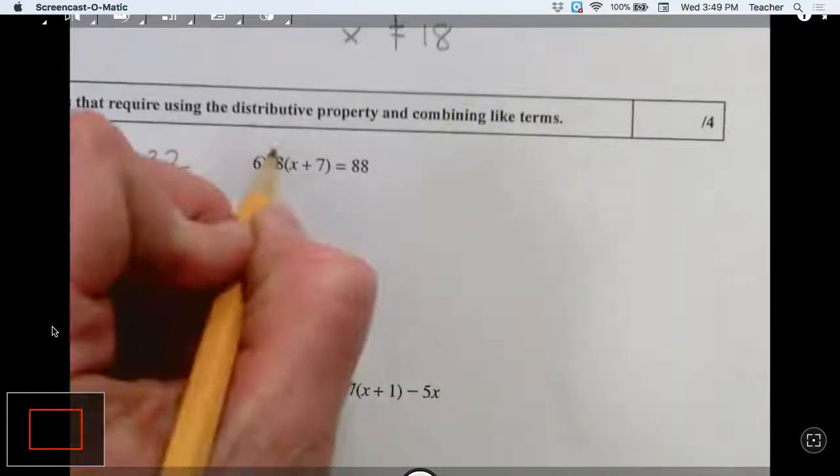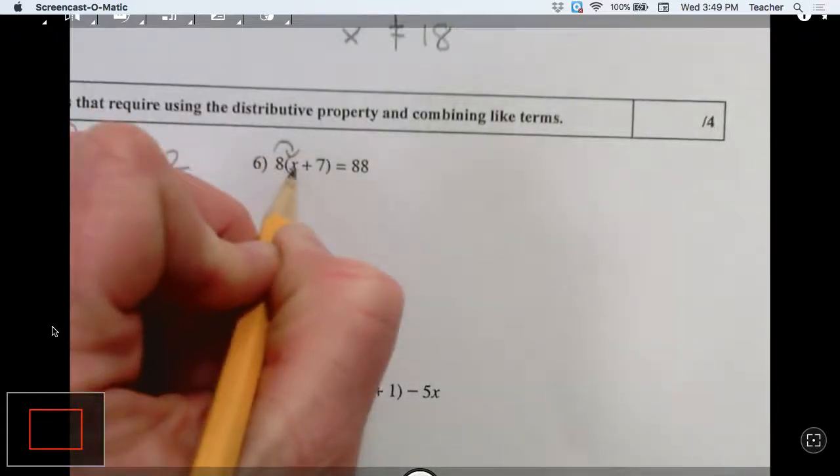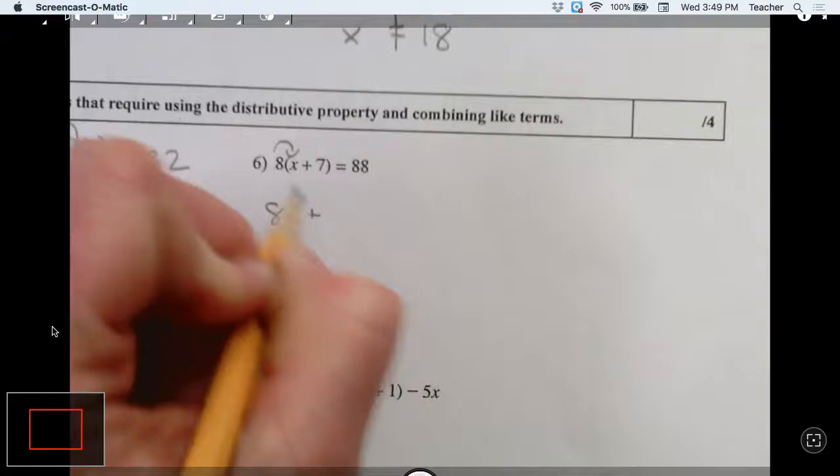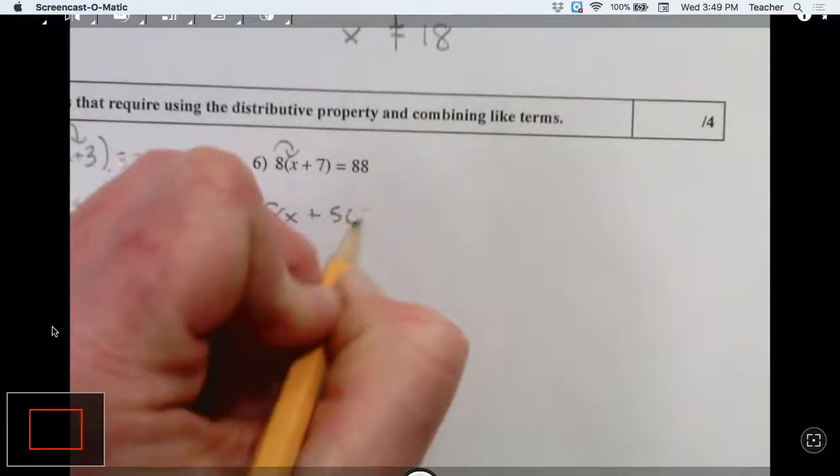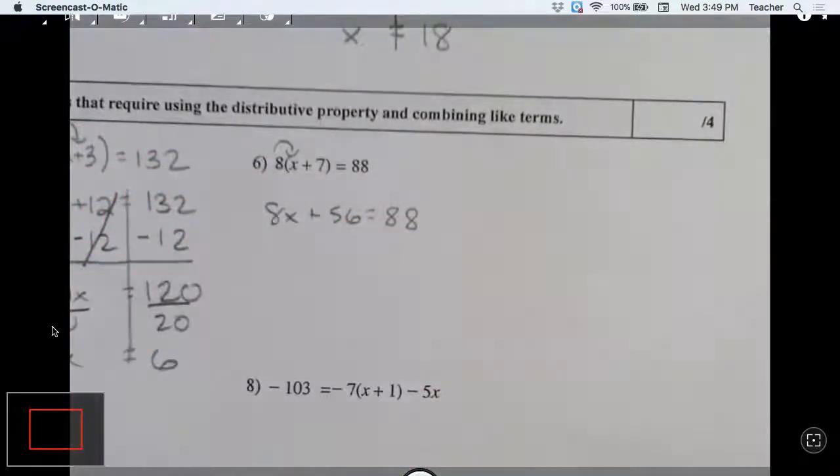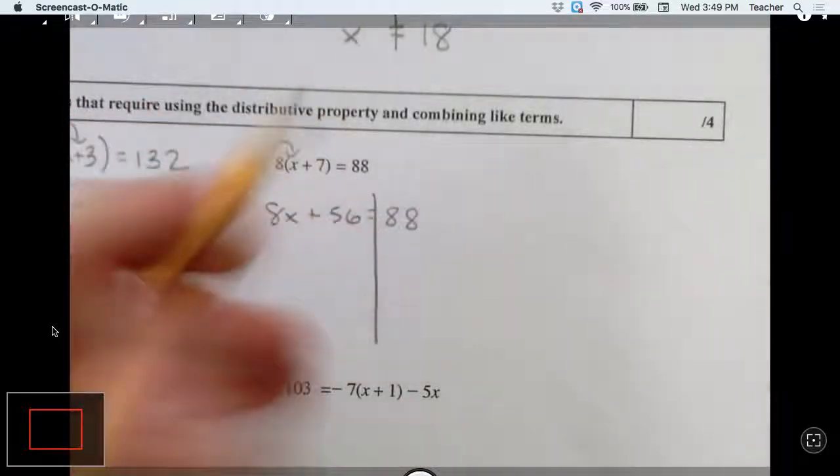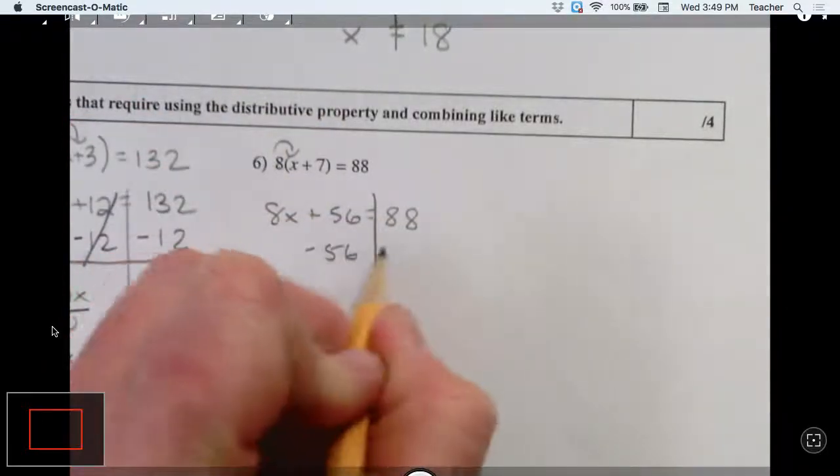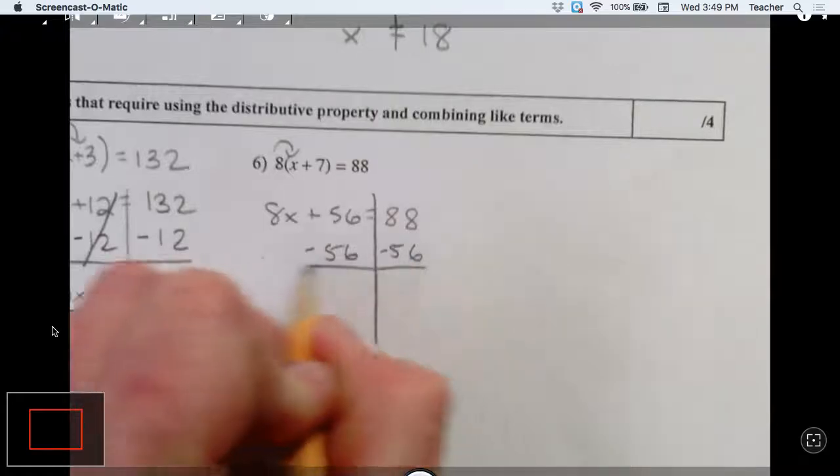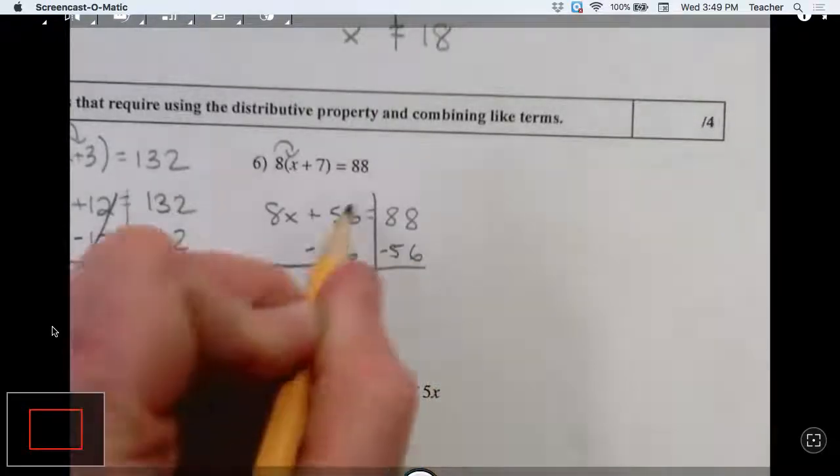Or we can go ahead and distribute 8 times x, 8 times 7. And now we just solve this. Subtract our 56. Zero pair.